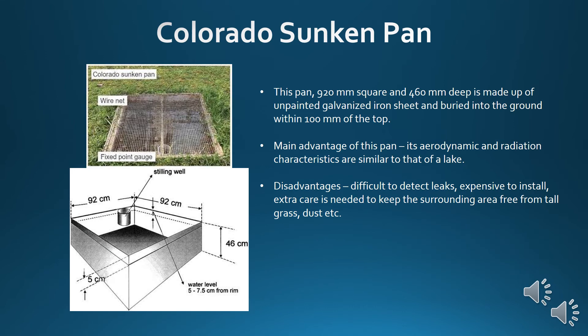The Colorado sunken pan is 920 mm square and 460 mm deep. It is made of unpainted galvanized iron sheet and buried into the ground within 100 mm of the top. The main advantage of this pan is that its aerodynamic and radiation characteristics are similar to that of a lake. The disadvantages are that it is difficult to detect leaks, expensive to install, and extra care is needed to keep the surrounding area free from tall grass and dust.